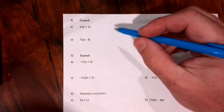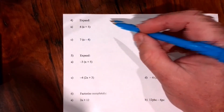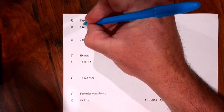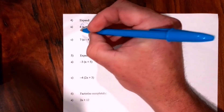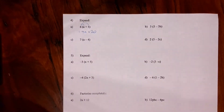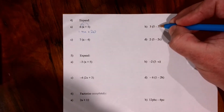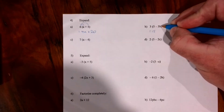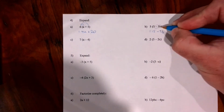Up to question 4 most things were probably seen in Year 7, but expanding might be new. When you see the word expand, we multiply the term outside the bracket by each term inside. So for question 4a: 4 times a makes 4a, and 4 times 5 makes 20. For question 4b: 3 times 5 makes 15, then 3 times minus 3b makes minus 9b — not forgetting about that negative, which goes with the term.